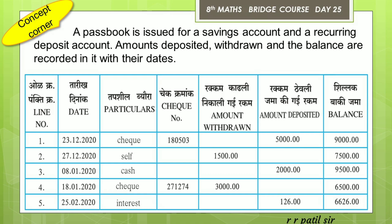What is the third entry? It is on January 1st. On January 1st, we have a cash deposit of 2,000. So the balance is 7,500 plus 2,000, which gives us a balance of 9,500.